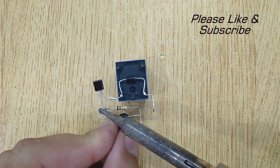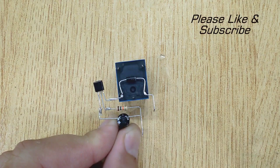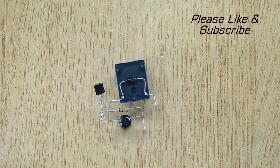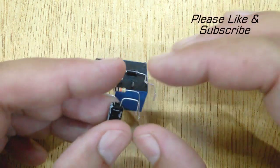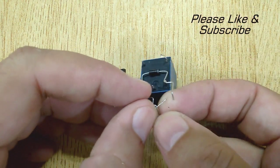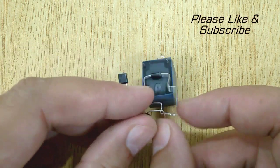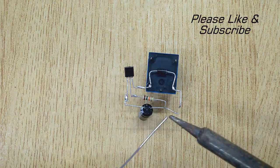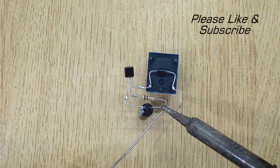Then, solder the negative pin of the 330 microfarad capacitor with the emitter of the transistor. Next, solder the positive pin of the capacitor with the resistor.